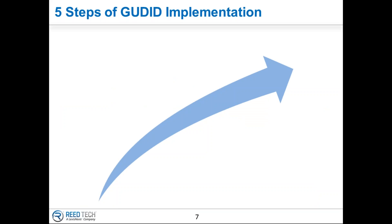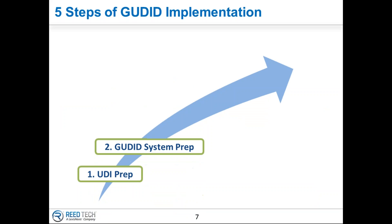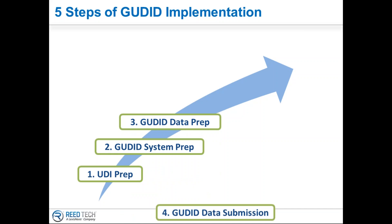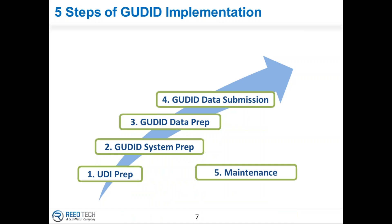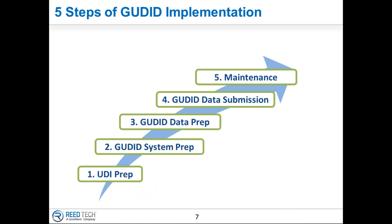What we will do is walk through various steps for you to implement a UDI in a GoodID system. First is to get a plan together, do the preparation, then move into preparation for the GoodID submission, pull the data together and submit it, and then talk about rolling into a maintenance ongoing steady-state process where you'll be submitting any changes and rolling products out the door with the new label design.